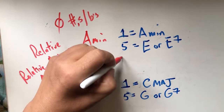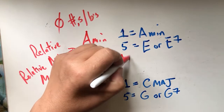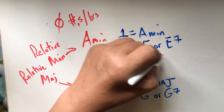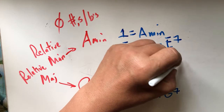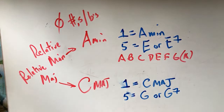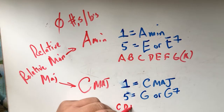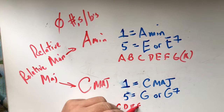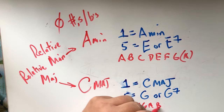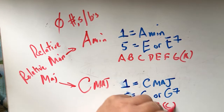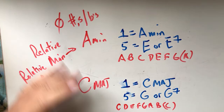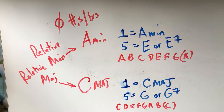That means your A minor scale is A, B, C, D, E, F, and G, and then A again. And your C major scale is C, D, E, F, G, A, B, and then C again — no sharps and flats. Since they share that key signature of no sharps and flats, they're called relative major and minor.